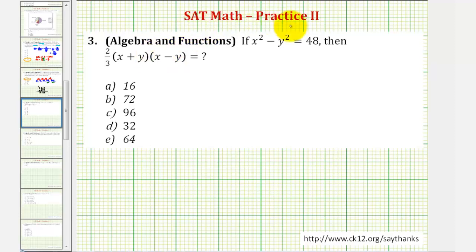Welcome to a practice SAT math question. Here we're given x squared minus y squared equals 48, and asked to evaluate 2/3 times the quantity x plus y, times the quantity x minus y.